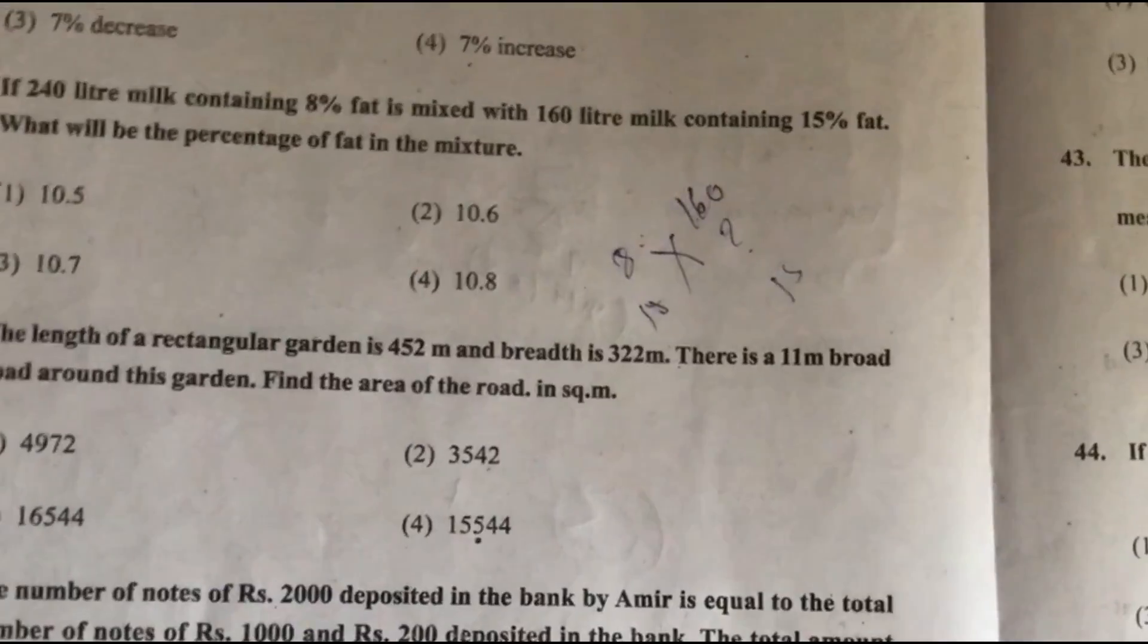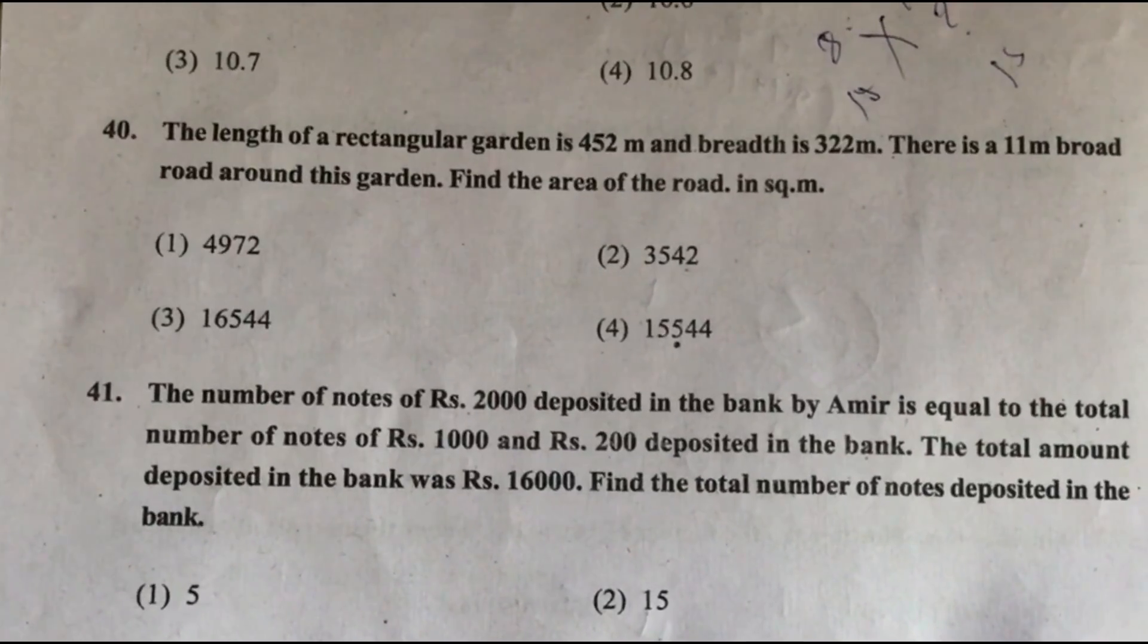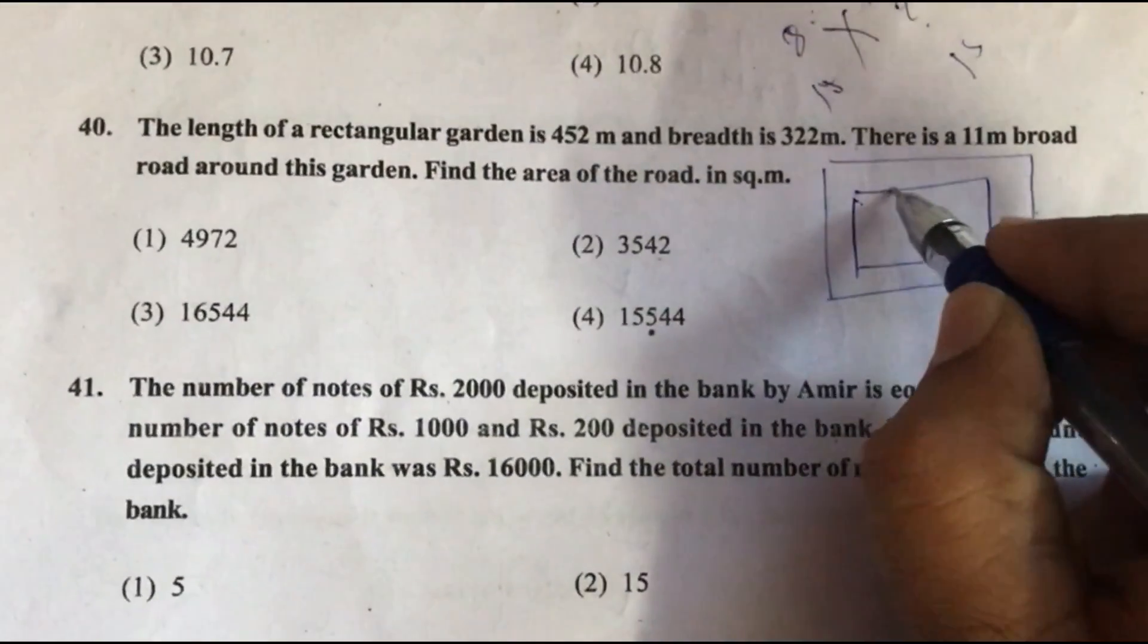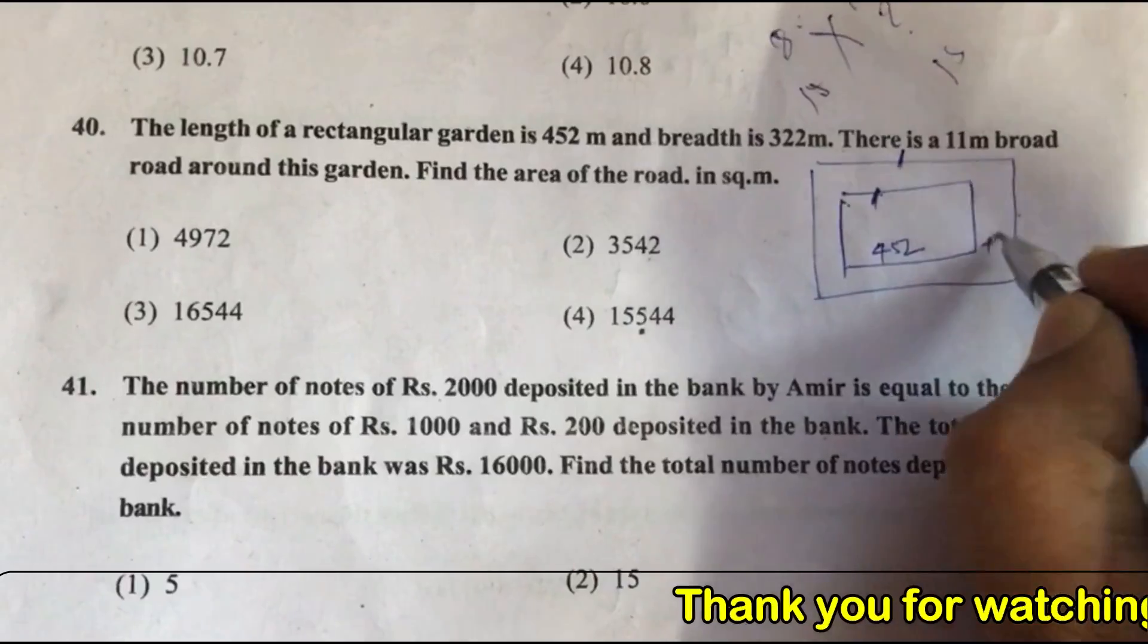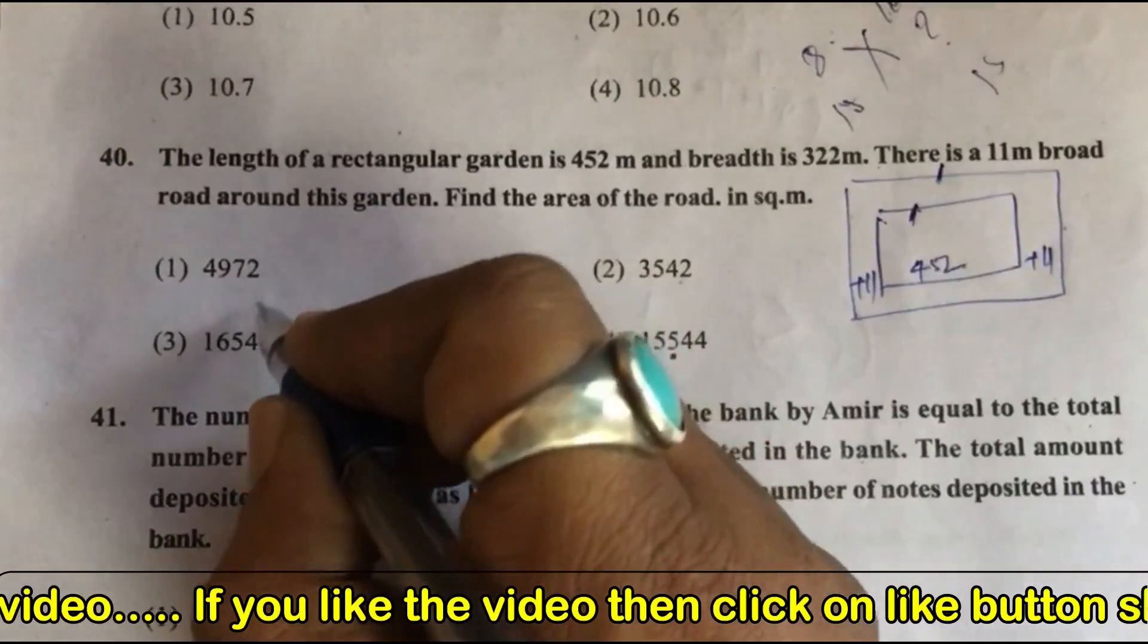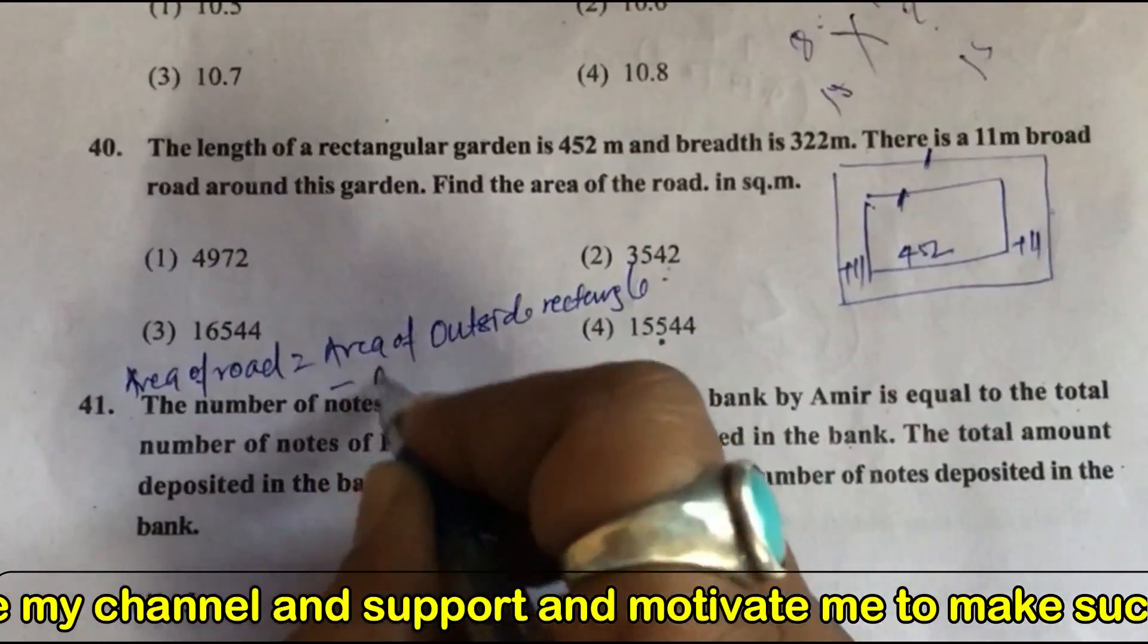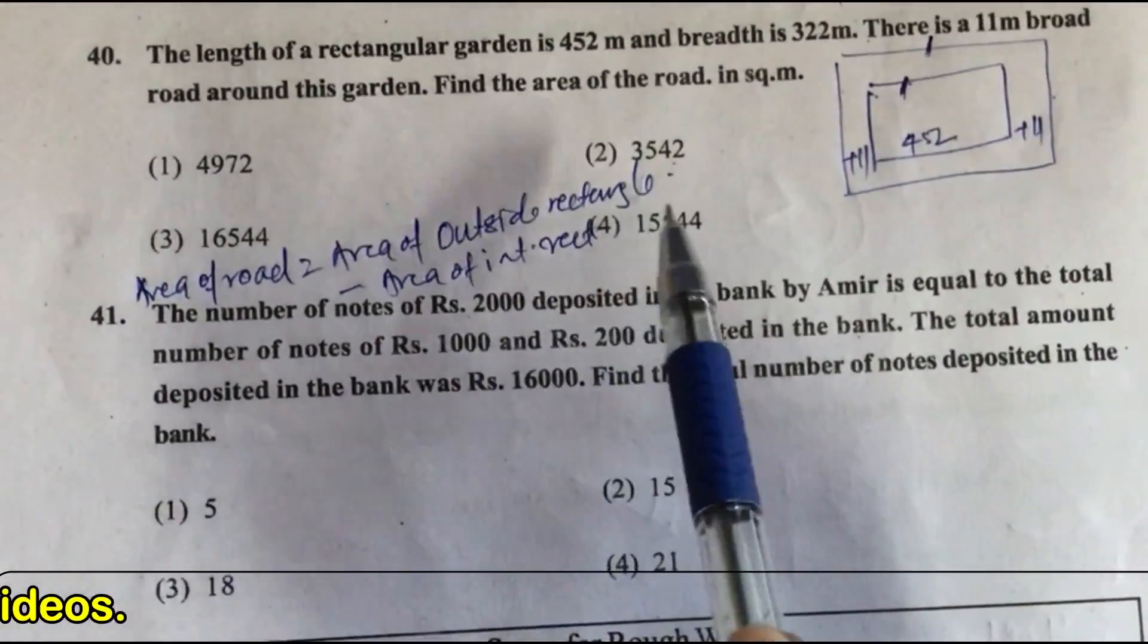Question 40: The length of a rectangular garden is 452 meter and breadth is 322 meter. There is 11 meter broad road outside the garden. Find the area of the road. This is inner rectangle and this is outer rectangle. So length 452, outer length is 452 plus 11 plus 11. Area of the road is area of outside rectangle minus area of interior rectangle. When we solve, the problem is that the answer we are not getting in the options, so let this be doubtful.